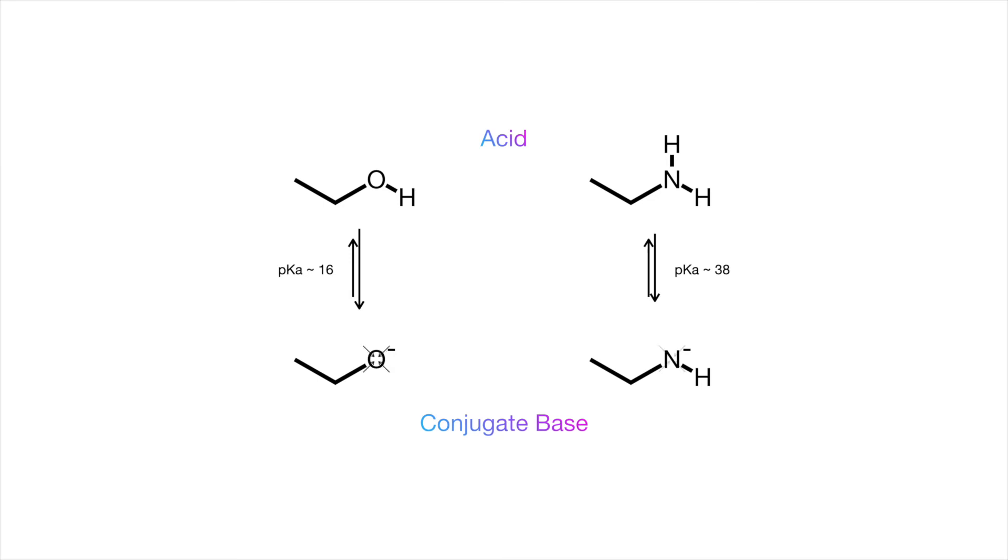Therefore, the more stable conjugate base is from the alcohol, making the alcohol more acidic than the amine. And as you can see, this is true from the pKa values. So, say, now you know the pKa of one form of the molecule and not the other, you can accurately know that at the very least, the amine form is going to be less acidic than the alcohol form.